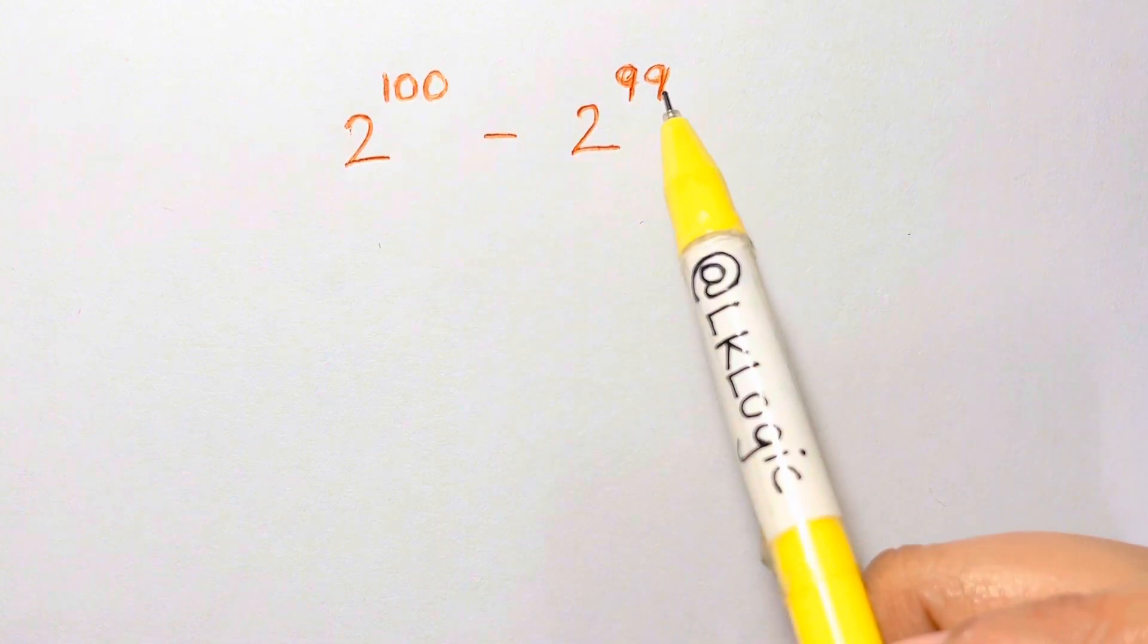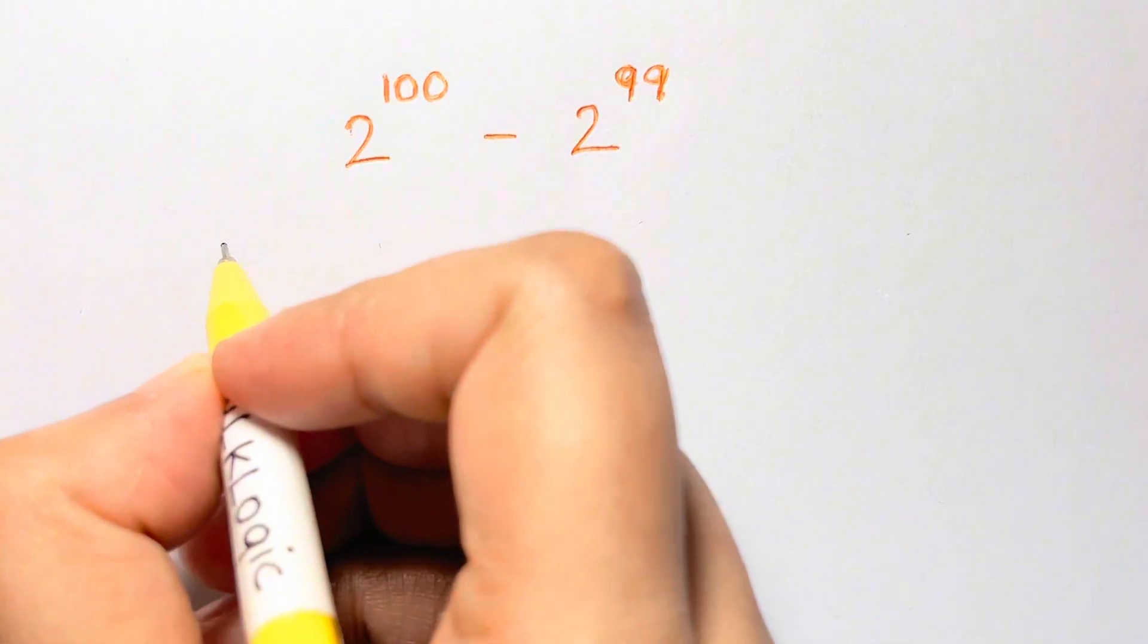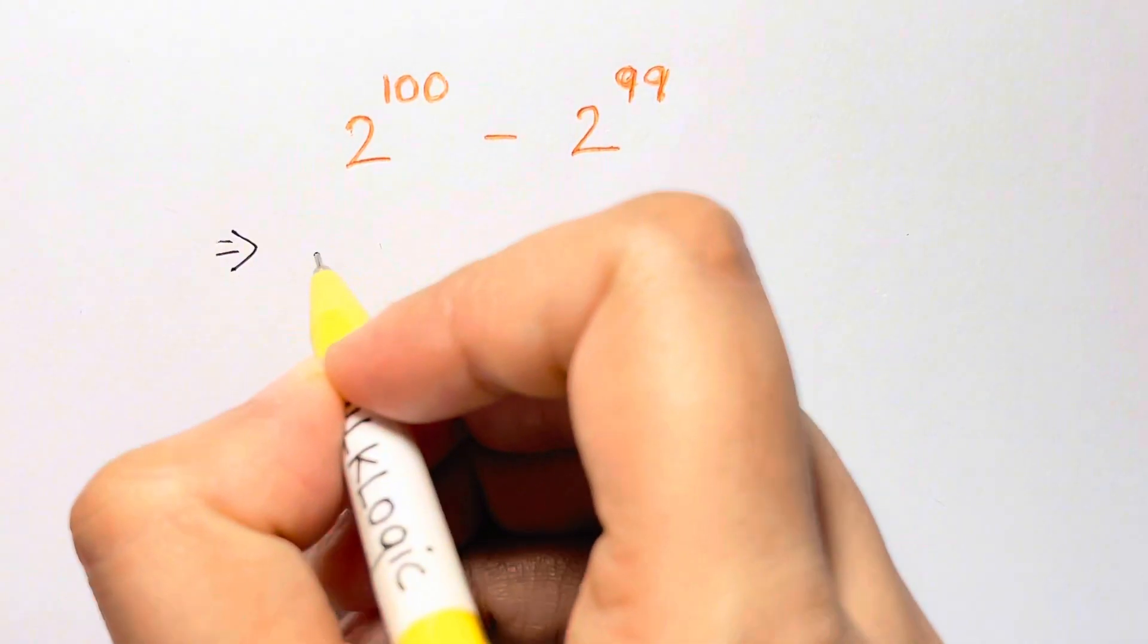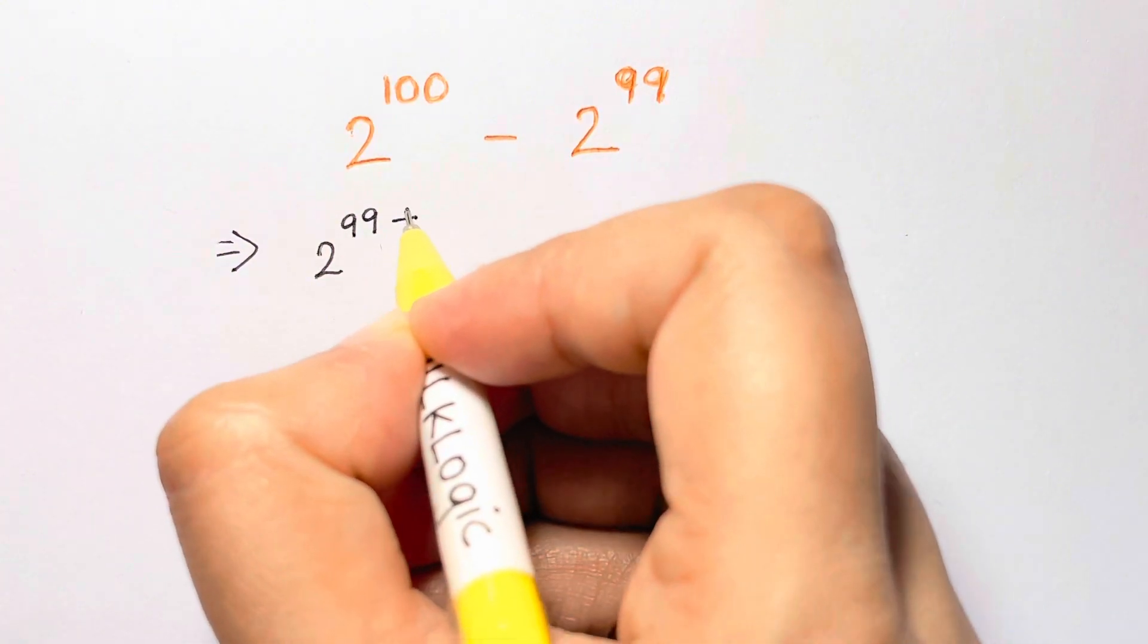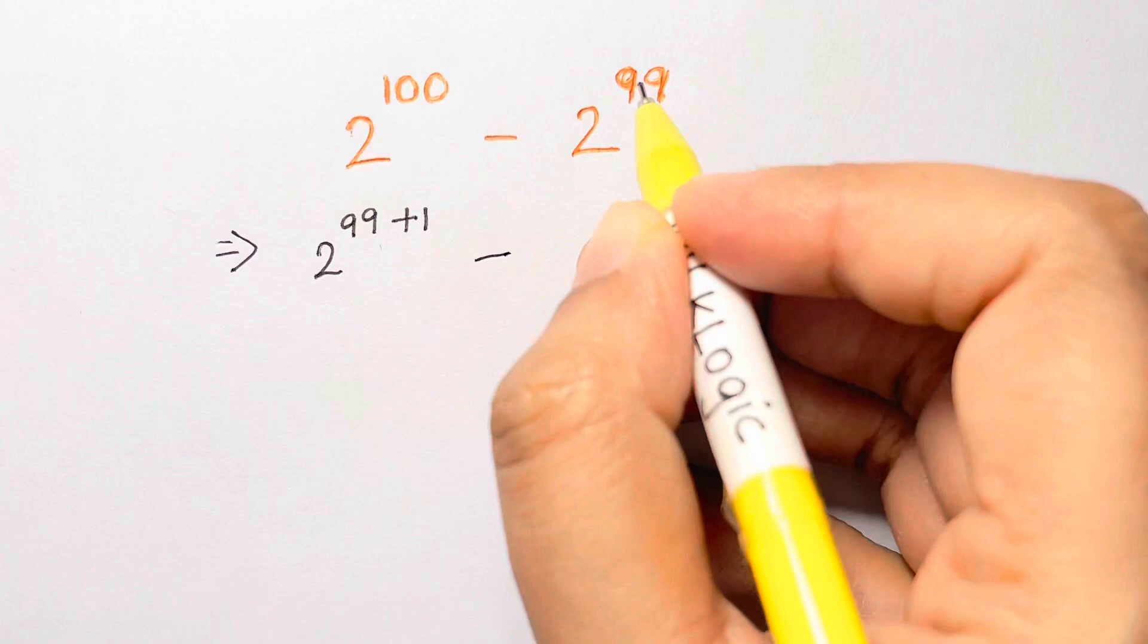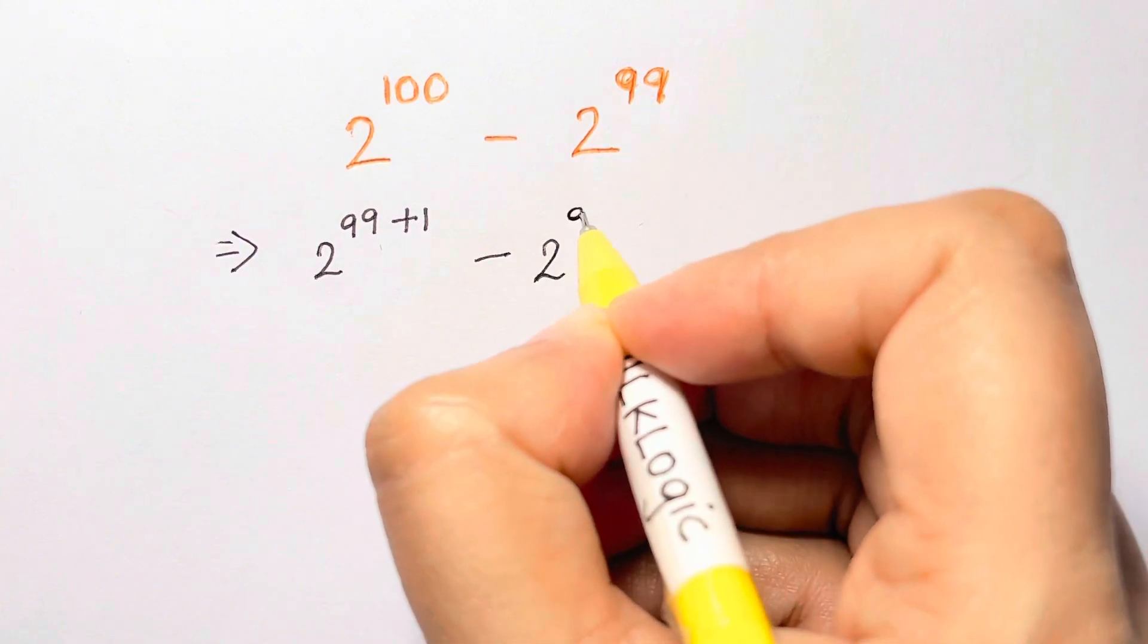So you can write 100 in terms of 99. So let's write it down. You can write it as 2 to the power of, 100 can be written as 99 plus 1, and then here you have 2 to the power of 99 again.